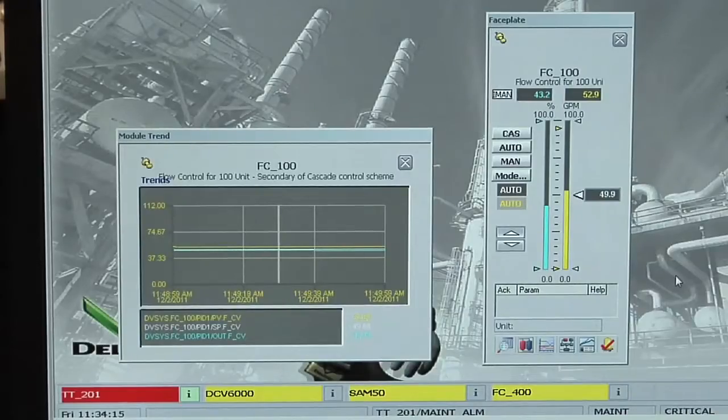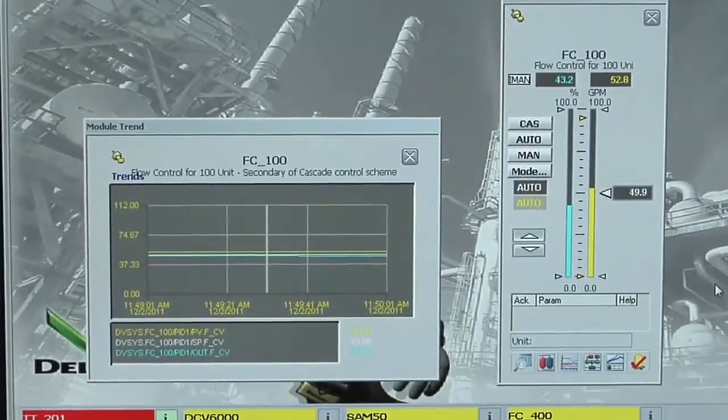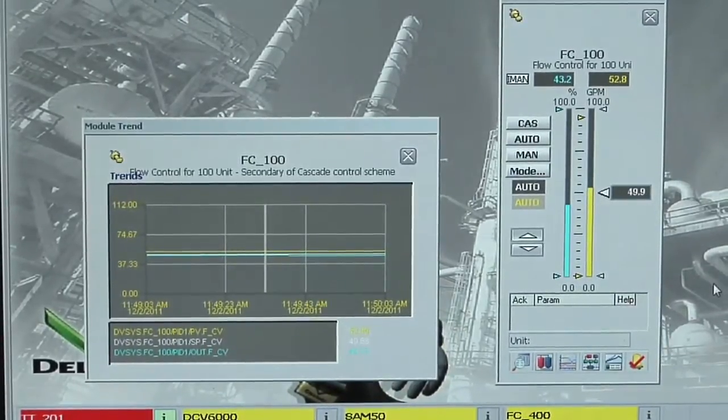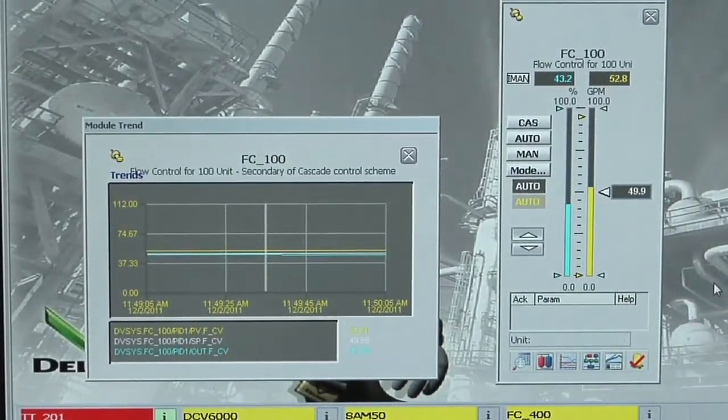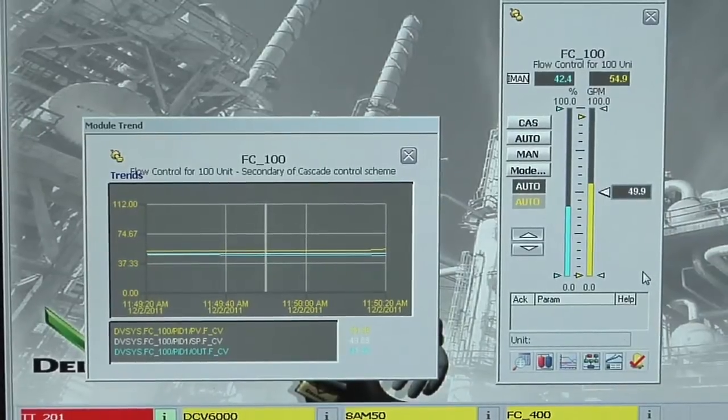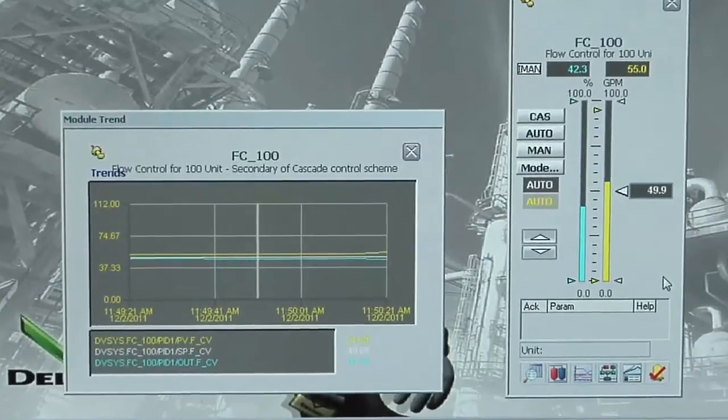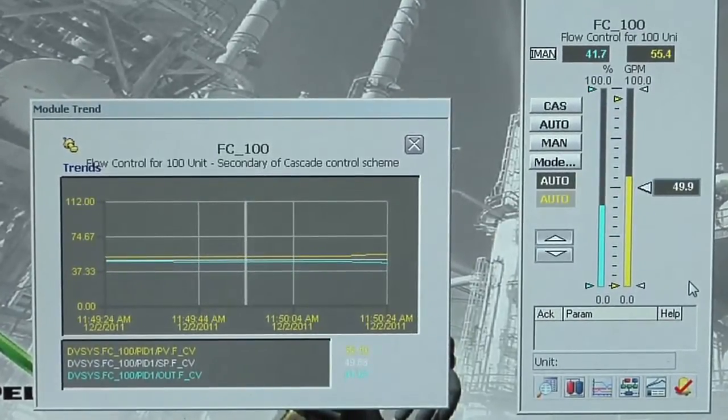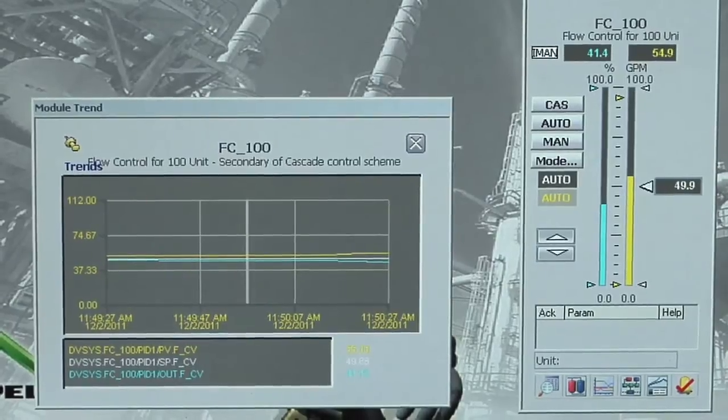Okay, so now let's demonstrate briefly what happens when we lose our process signal. So here's the controller with the process value on the right side with the yellow bar graph and the valve output with this blue bar graph. So we're holding, we're in automatic. Everybody's happy. Things are controlling well. And what I'm going to do, number one, go down to the diagnostic page.